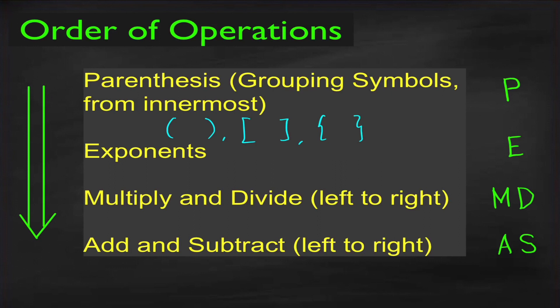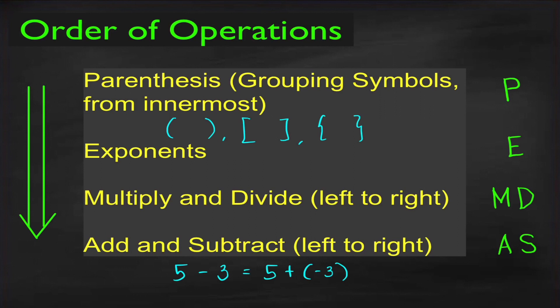Have you wondered why addition and subtraction are of the same level? Because subtraction is like addition. For example, 5 minus 3 is equal to 5 plus negative 3. Similarly, multiplication and division are of the same level because division is like multiplication. For example, 8 divided by 2 is equal to 8 times one-half. Note that the arithmetic operations here are exponents, multiplication, division, addition, and subtraction.